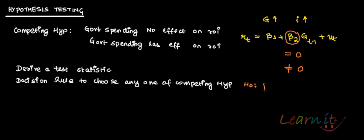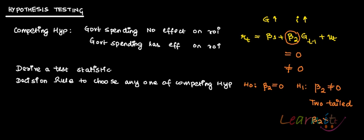Your null hypothesis H-naught is that beta 2 equals zero, and the alternative hypothesis is that beta 2 is not equal to zero. Not equal to zero means beta 2 could be greater than zero or less than zero, making this a two-tailed test. If you had specified strictly beta 2 greater than zero or less than zero, that would be a one-tailed test.